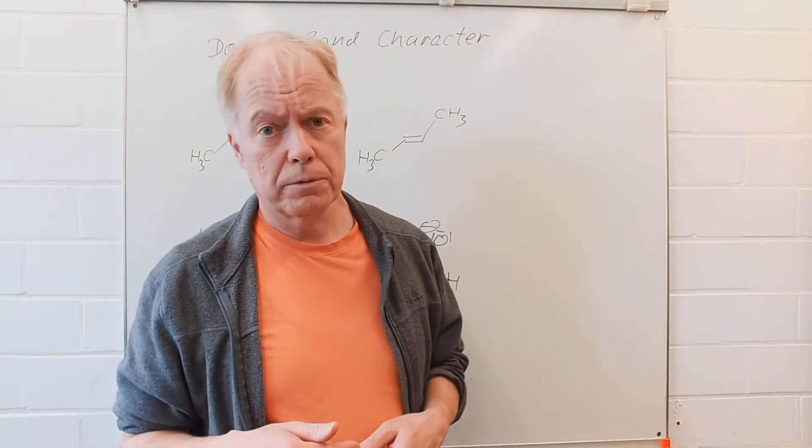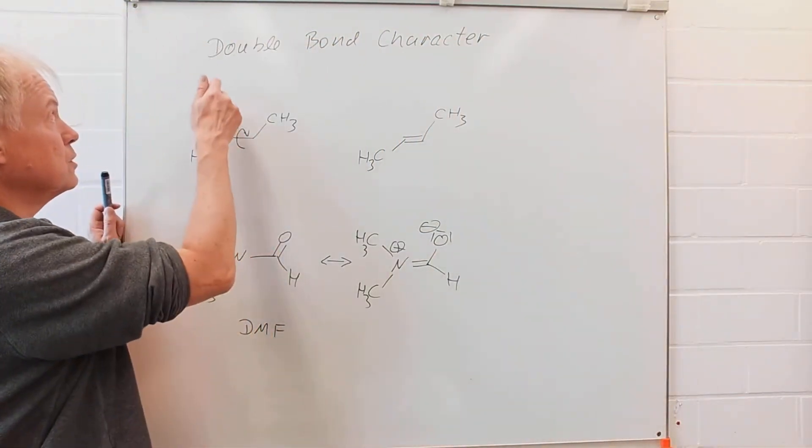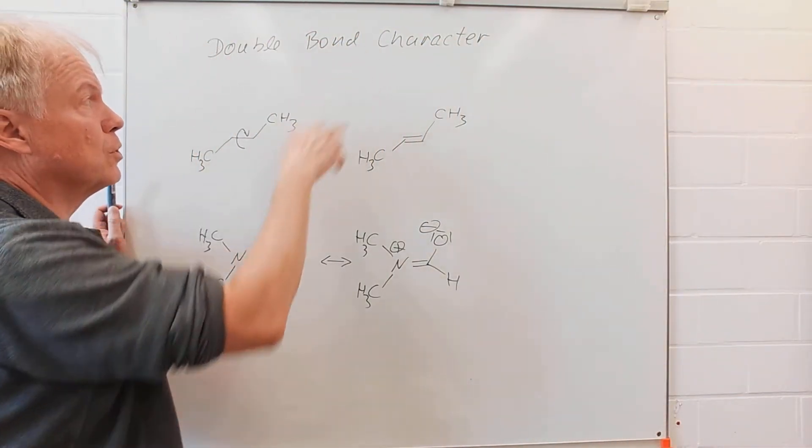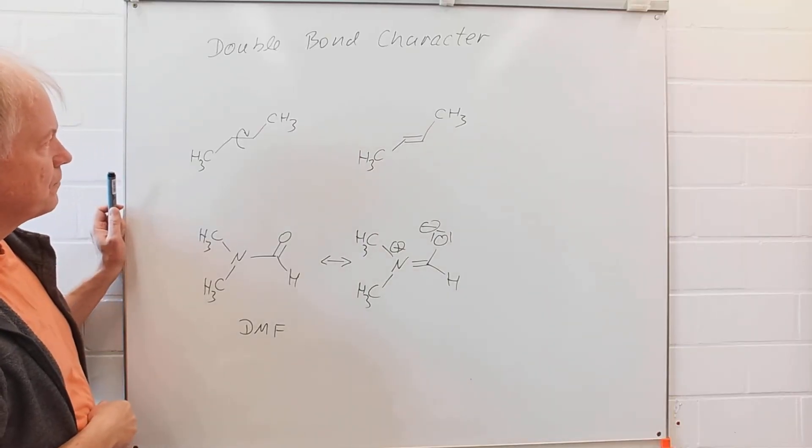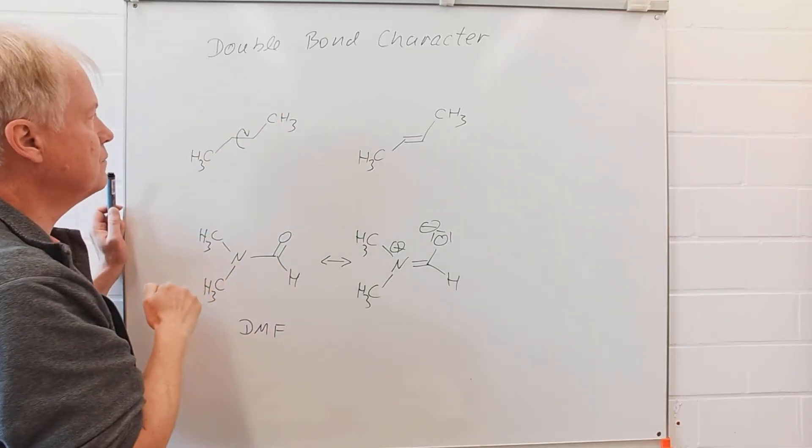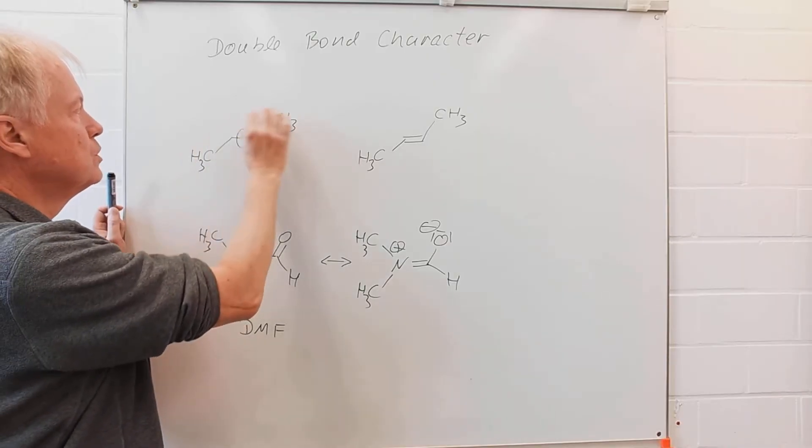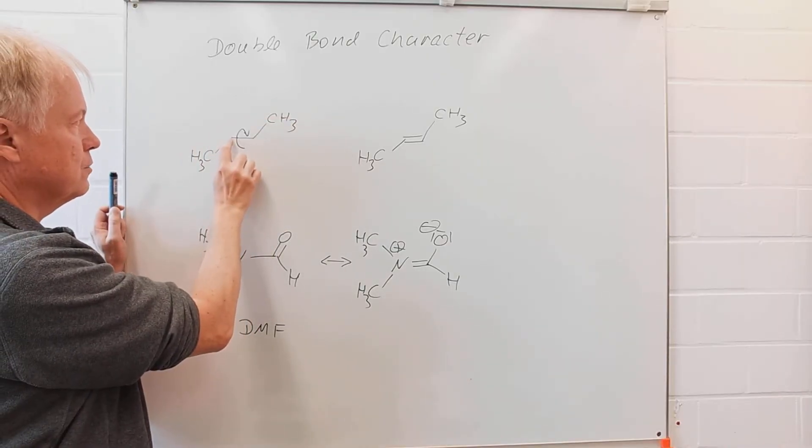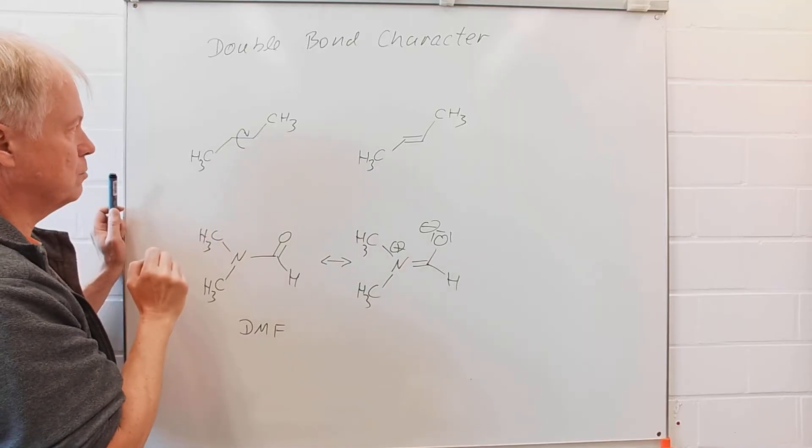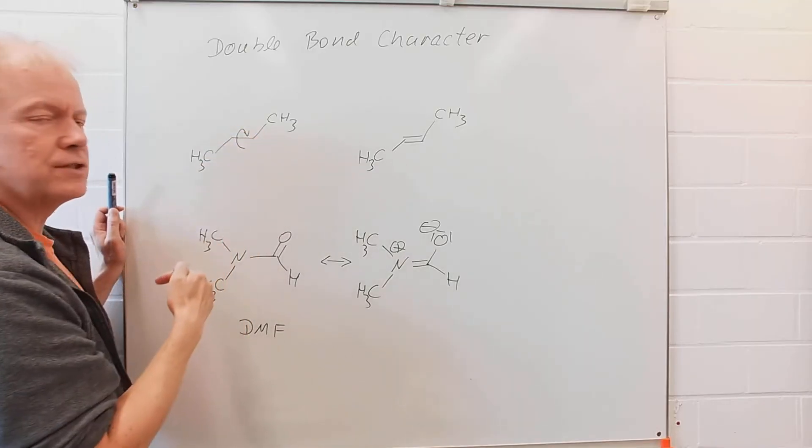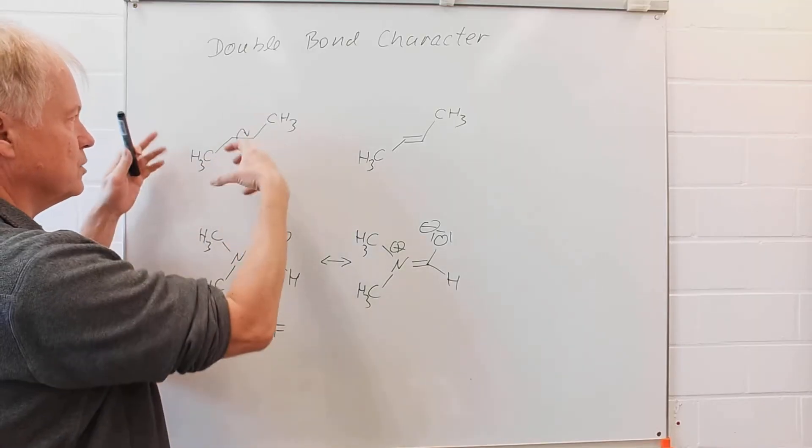In today's tutorial, we will talk about what the term 'double bond character' means. Here we have butane as a molecule with a central C-C single bond, and around this single bond the parts of the molecule can rotate very fast.